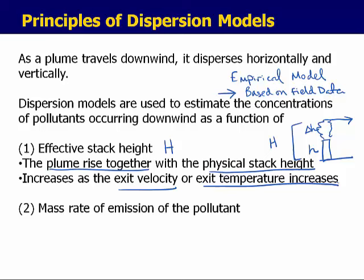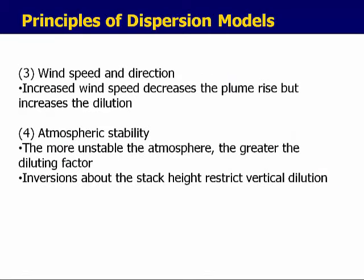The effective stack height increases with the exit velocity of the pollution and the exit temperature, because warm air rises. The dispersion of the pollution is also a function of the mass rate of emission of the pollutant — the concentration downwind increases with the amount of mass put into the atmosphere. The third major factor is wind speed and direction: increased wind speed decreases plume rise but increases dilution. The fourth factor is atmospheric stability — an unstable atmosphere increases dilution, whereas inversions from stable atmospheres restrict vertical dilution and can increase concentration downwind.